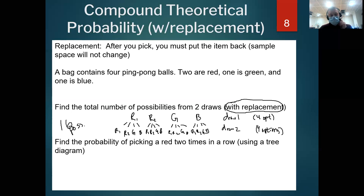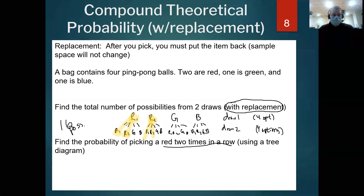Now we're going to find the probability of picking a red two times in a row using the tree diagram. What are the options for picking red twice? I could pick R1 then R2, or R2 then R1. Actually I have four different options: R1/R2, R2/R1, R1/R1, and R2/R2. So there are four different ways to pick a red two times in a row.